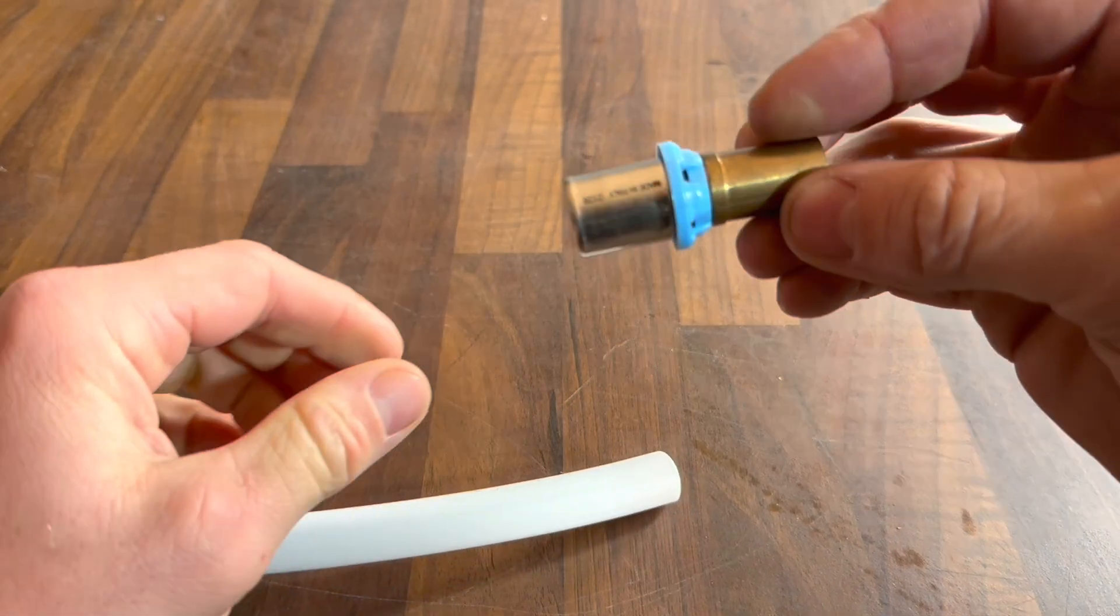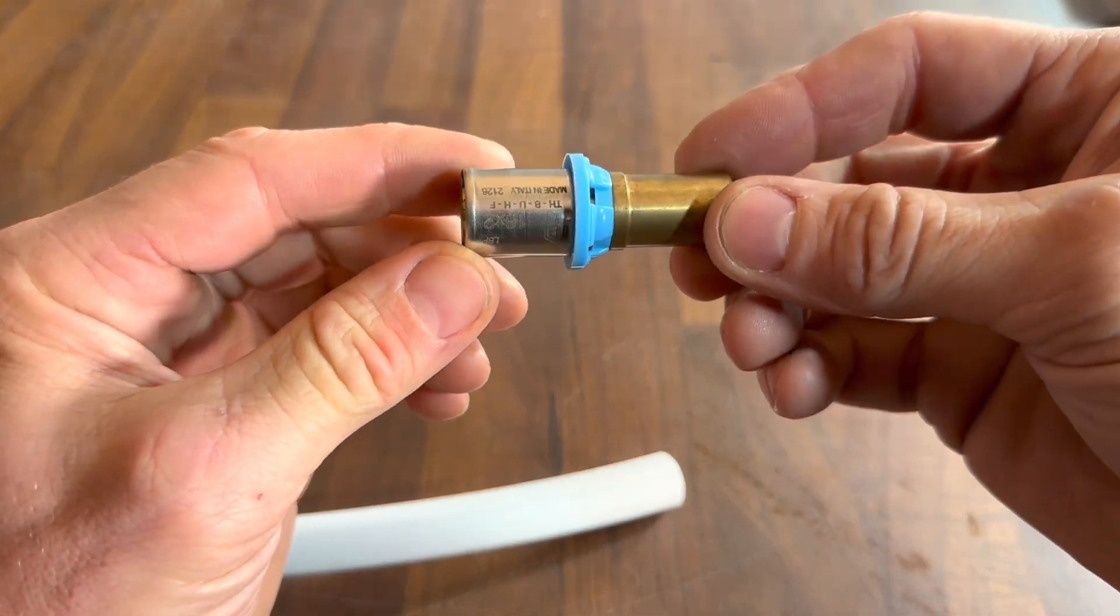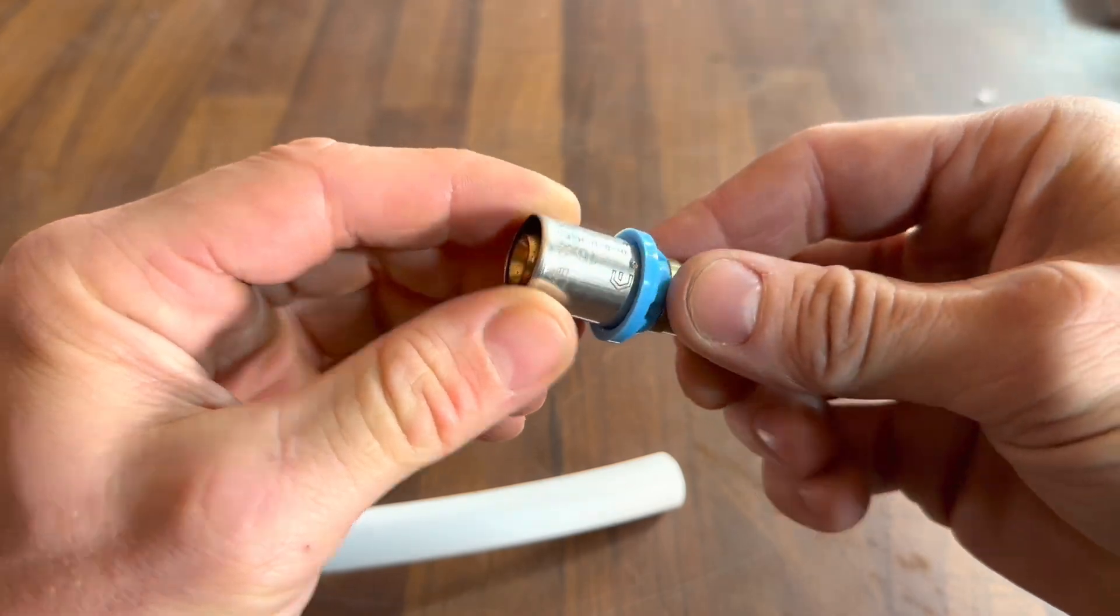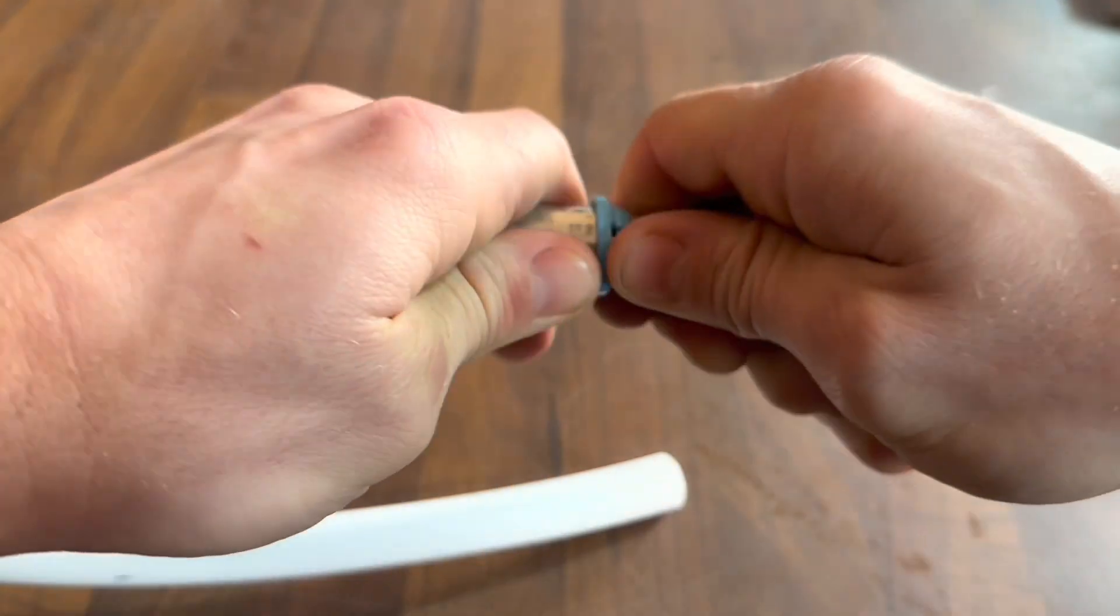Now the fittings, I'm just going to show you this one. This is a 16 mil MLCP to 15 mil copper adapter. Now I'm just going to break the fitting to show you what's inside it.